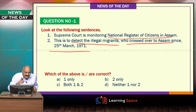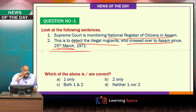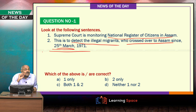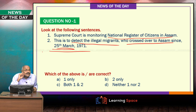Incidentally, 25th March is the date on which Bangladeshi authorities now declare as a genocide day, when Pakistani authorities violently attacked and subsequently resorted to genocide.